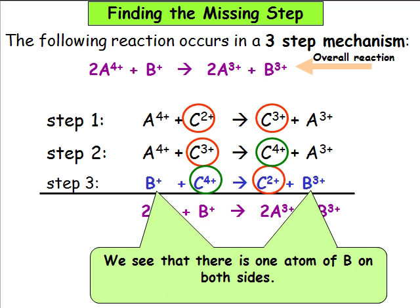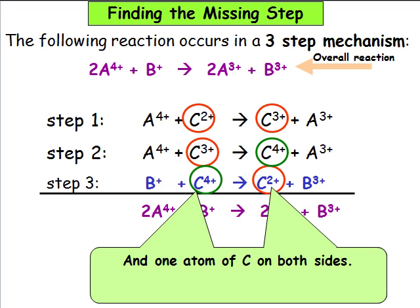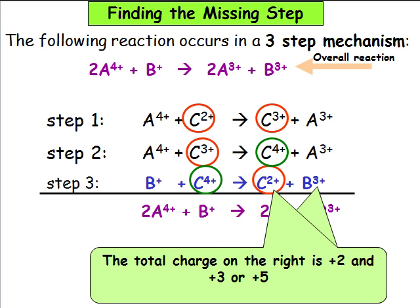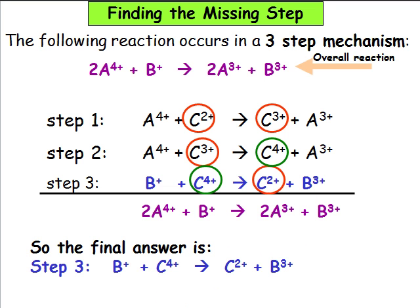We see that there is one atom of B on both sides and one atom of C on both sides, so atoms are balanced. The total charge on the left is +1 and +4, which is a total of +5. The total charge on the right is +2 and +3, which is also a total of +5, so the charge on each side is balanced. The final answer is that step 3 is B+ + C4+ → C2+ + B3+.